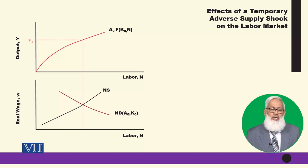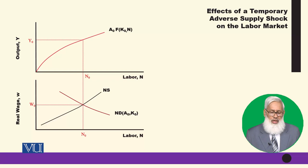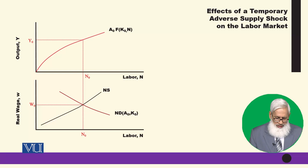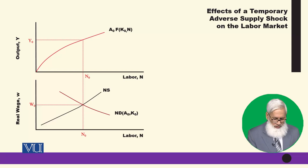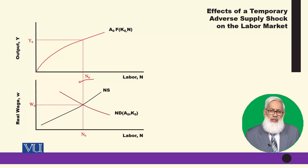Labor supply is usually positively sloped. The intersection of labor demand and labor supply determines the equilibrium employment level N0 and the market-clearing wage W0. Output is then determined — this is the full employment level, where all people who want to work are working and no one is unemployed.